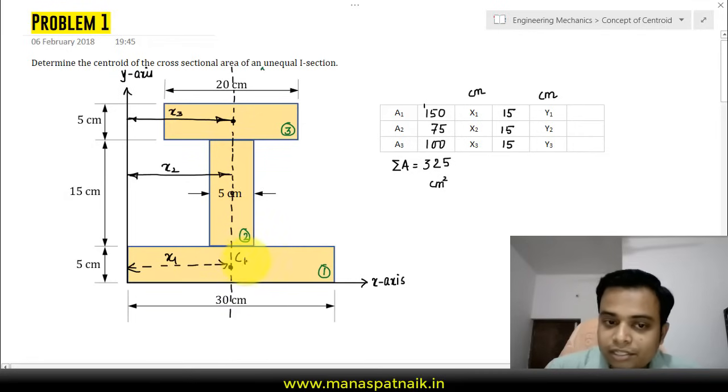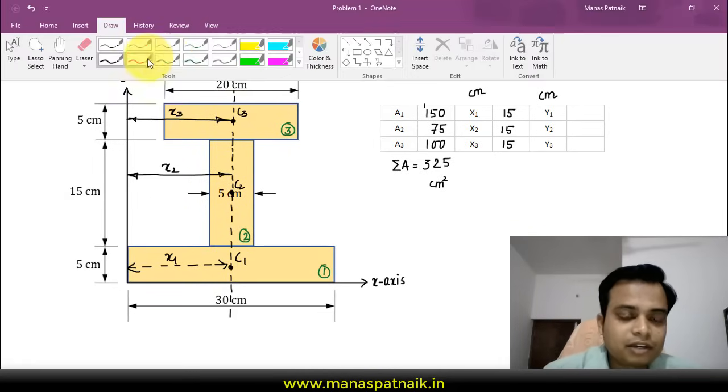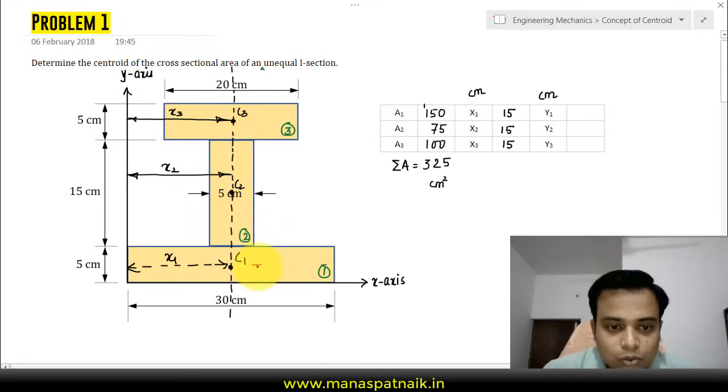You can say that their individual centroids are represented by c1, c2, and c3. Now let me have a different color, a red color. This over here, this small distance that you guys see, is what you refer to as y1.